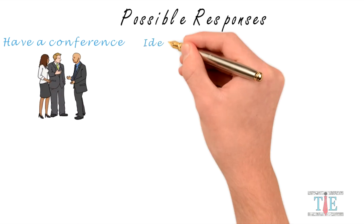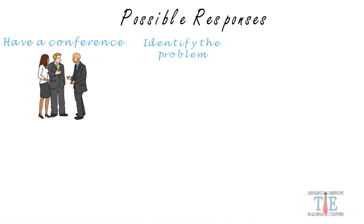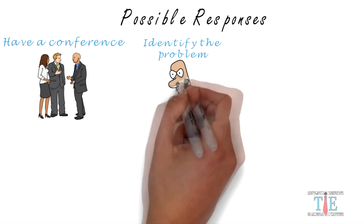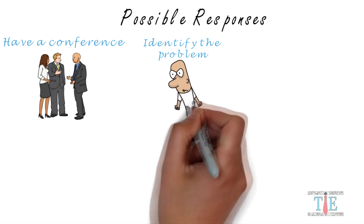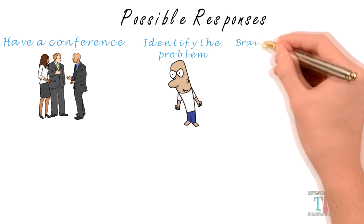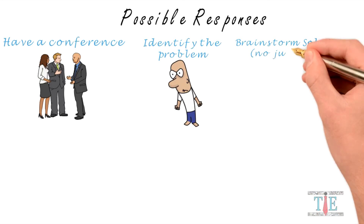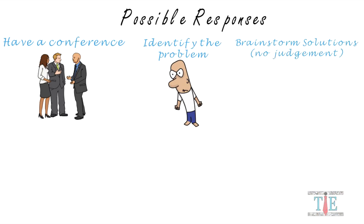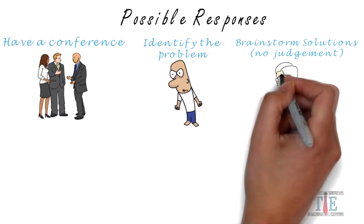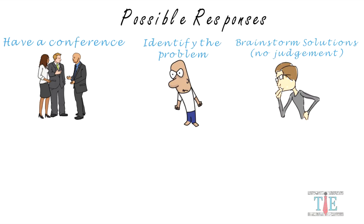But not until both of them are calm and ready to talk. Next, you want to identify the core problem. Don't be surprised if the problem was something very trivial, such as a parent not liking a teacher's tone during an email exchange — it can be anything. After you identify the problem, you then want to brainstorm solutions. It's important that it's a collaborative process and no judgment is passed at any time.